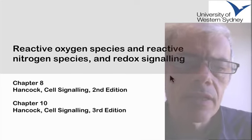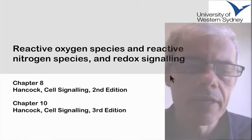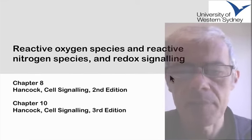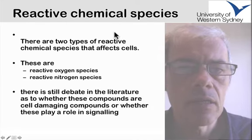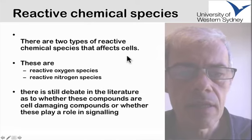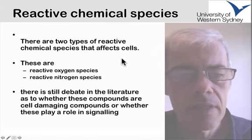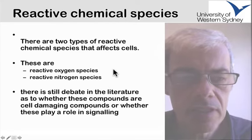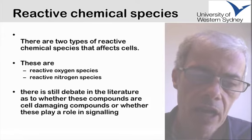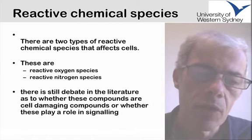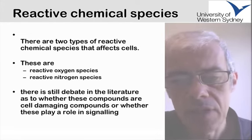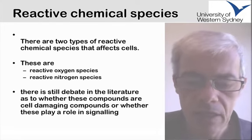In this lecture summary, I'd like to talk about reactive oxygen and reactive nitrogen species, and a little bit about redox signaling. There are two types of chemically reactive species discussed in the textbook: reactive oxygen species and reactive nitrogen species. We've already talked about reactive nitrogen in terms of nitric oxide as a signaling molecule, and there is still debate in the literature as to how significant reactive oxygen species are in signaling pathways.